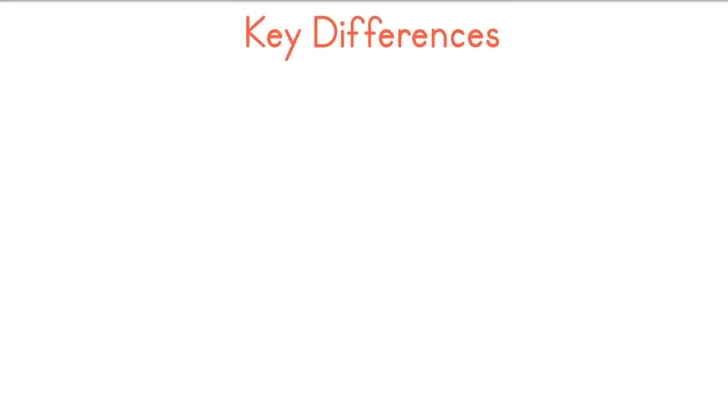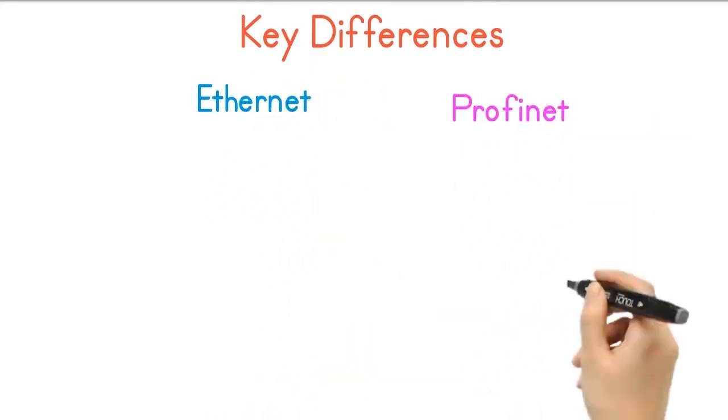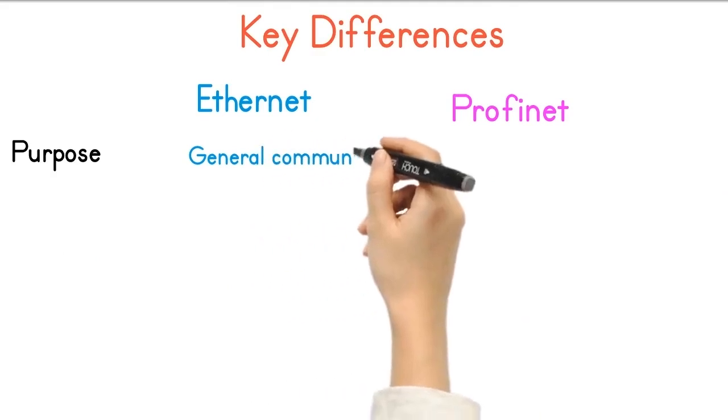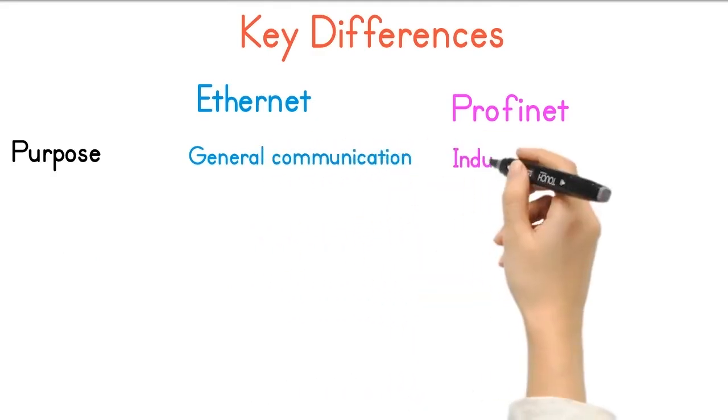Let's break down the key differences between Ethernet and Profinet. Purpose: Ethernet is used for general communication, while Profinet is used for industrial automation.